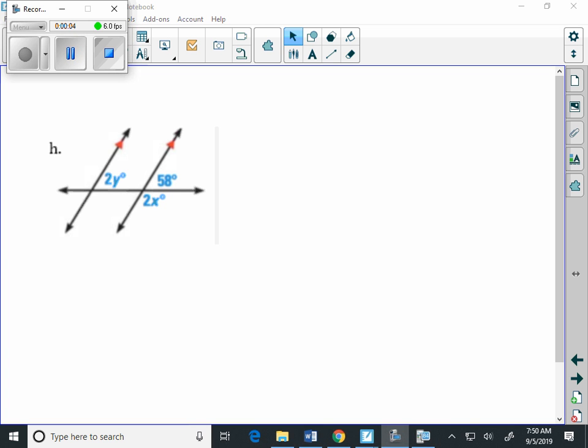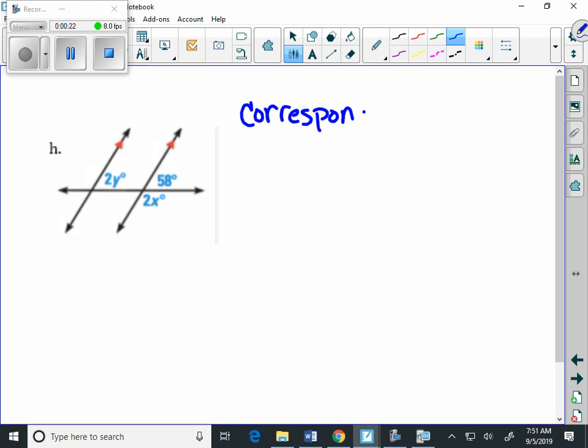Once again, as we look at these many types of parallel line problems, we need to recognize the different types of angles. And the first one I see is the fact that we've got the corresponding angles, and the corresponding angles are going to be this angle here along with that angle there. And what we know about corresponding angles is if we have two parallel lines cut by a transversal, which we do, then corresponding angles are equal.